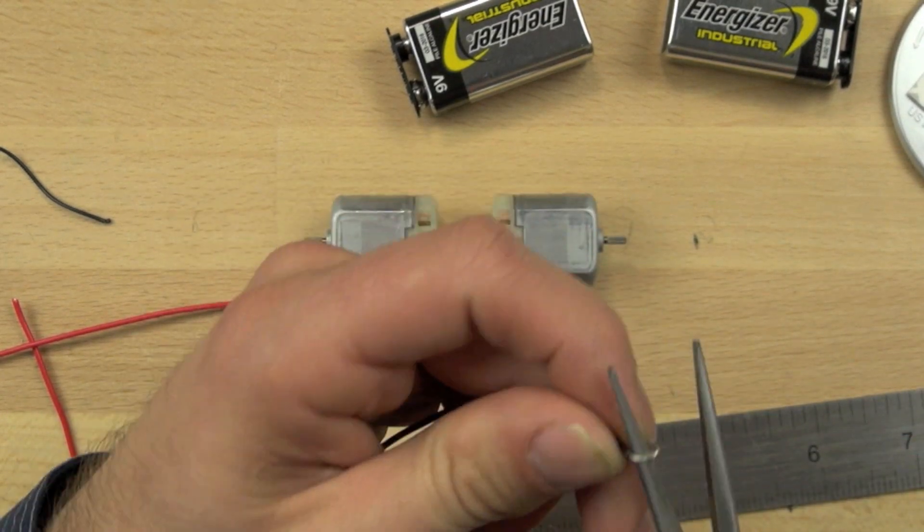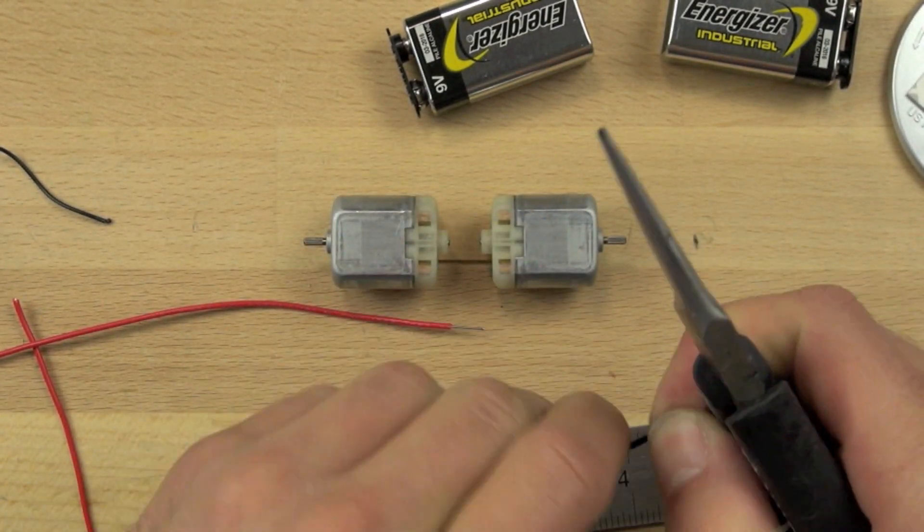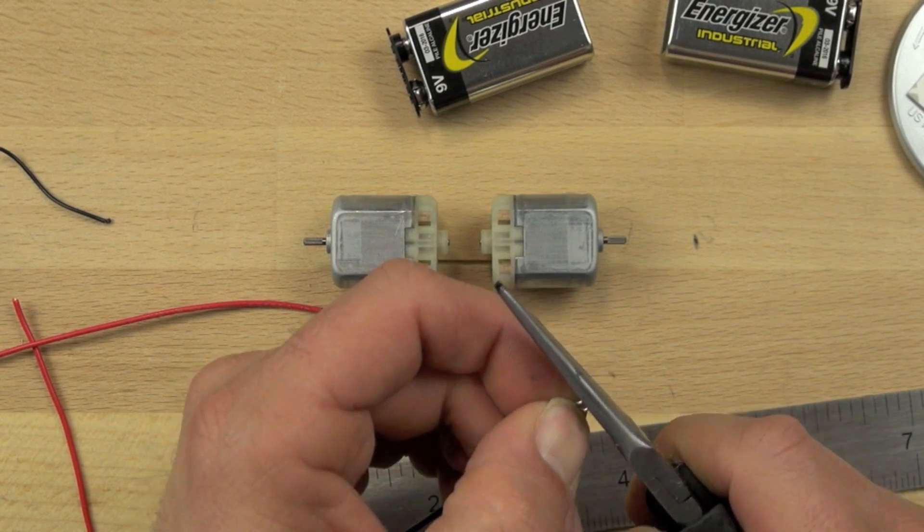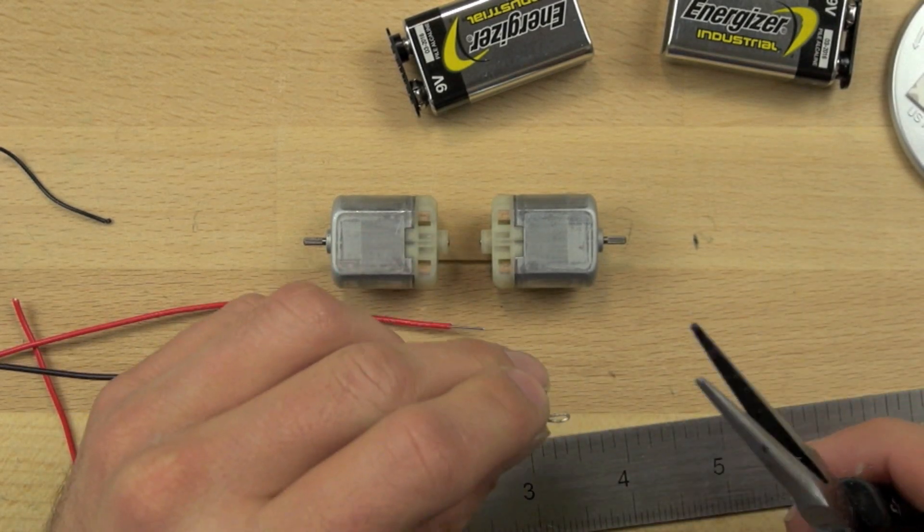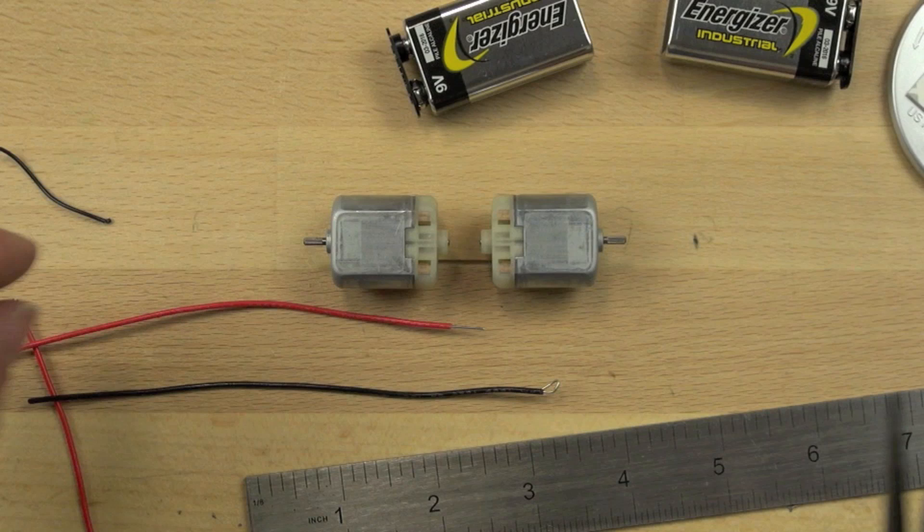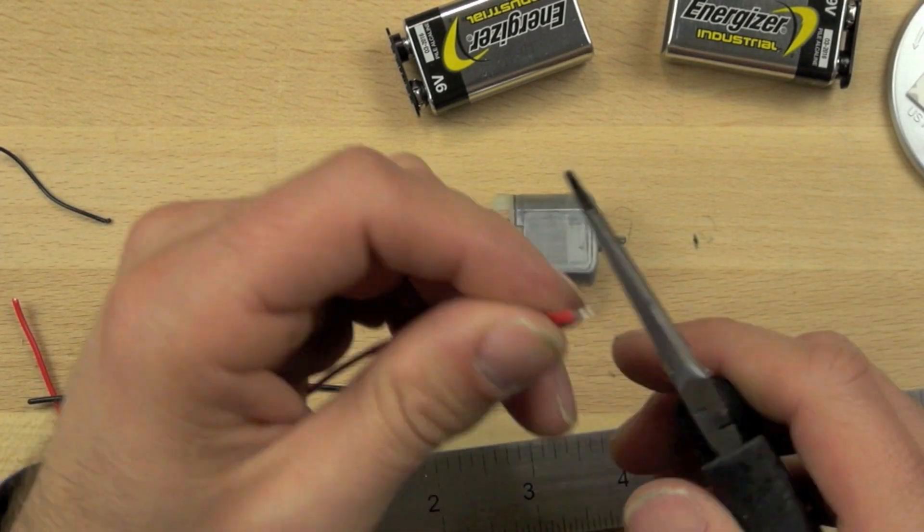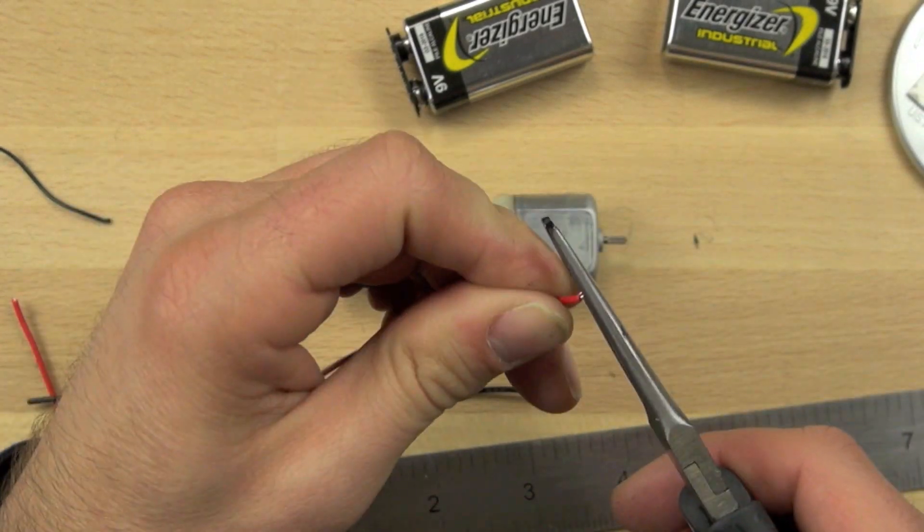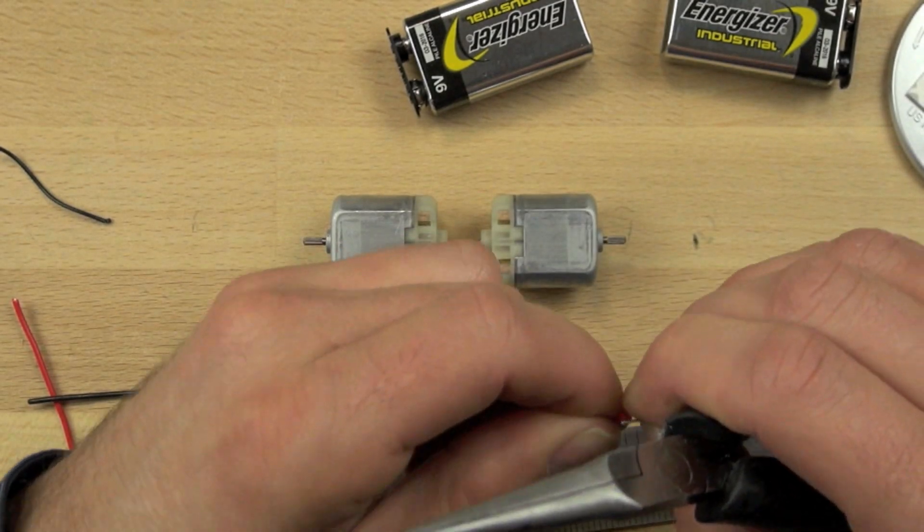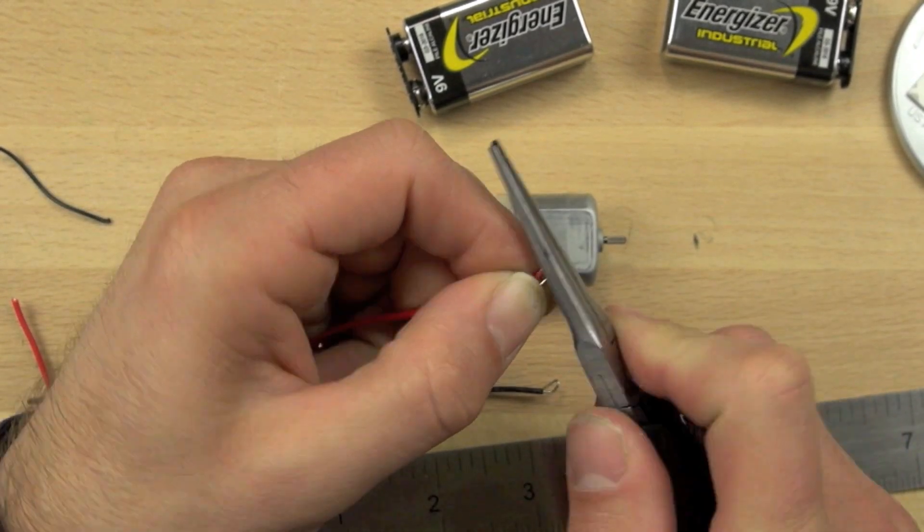We're going to use our needle nose pliers and twist those wires in a loop. And then we're going to just bend that loop slightly. The reason we want to bend that loop slightly is that it's going to help it to stick into the motor. The motor has a little connection that will allow us to—that's going to basically grab that wire and hold it in place.